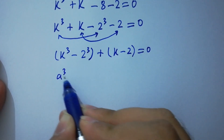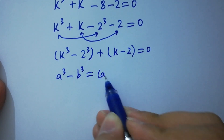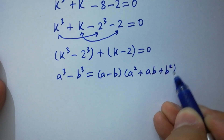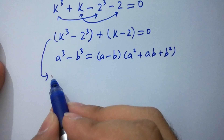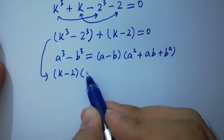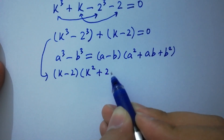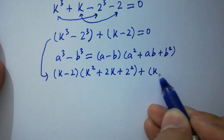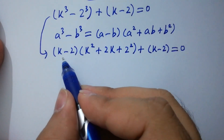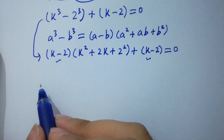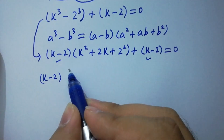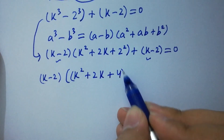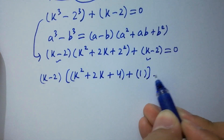Since a cubed minus b cubed equals a minus b times a squared plus ab plus b squared, we have k minus 2 times k squared plus 2k plus 4, plus k minus 2, equals 0. Here k minus 2 can be common.